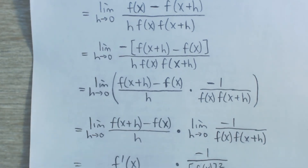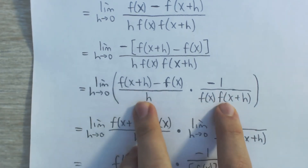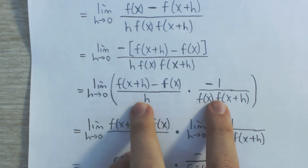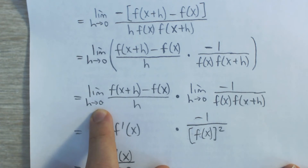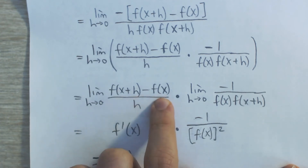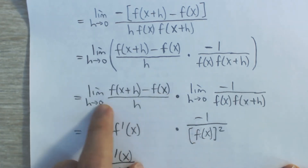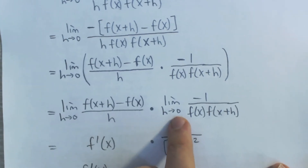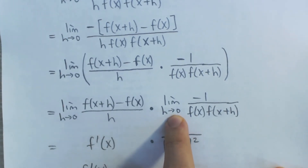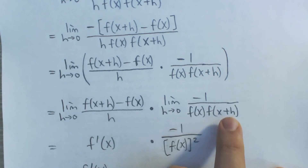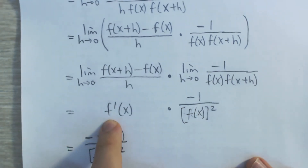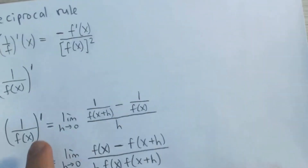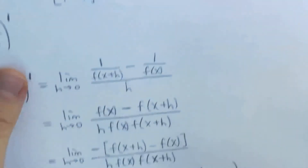Now we can use the product rule for limits — we have the product of two things, so we can write it as the limit of each individually. On the left, the limit as h approaches 0 of f of x plus h minus f of x over h — that's the derivative of f by definition. On the right, we have the limit as h approaches 0 of negative 1 over f of x times f of x plus h, which is what we need for the final answer.